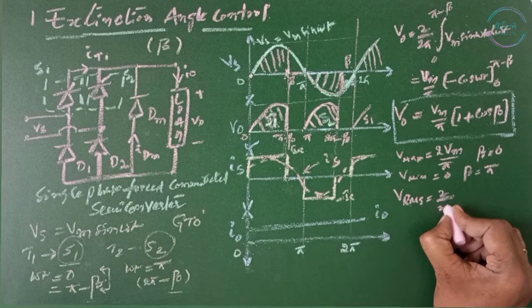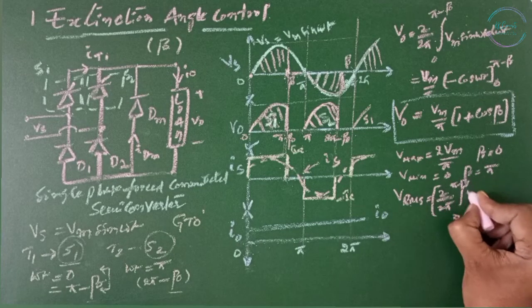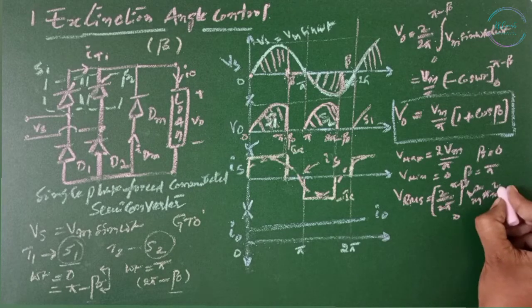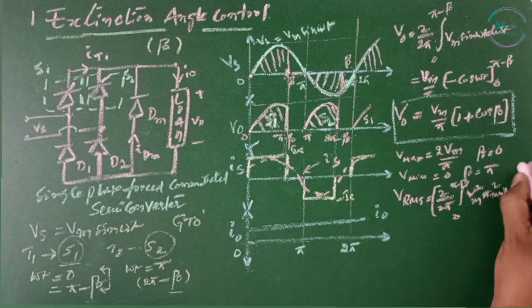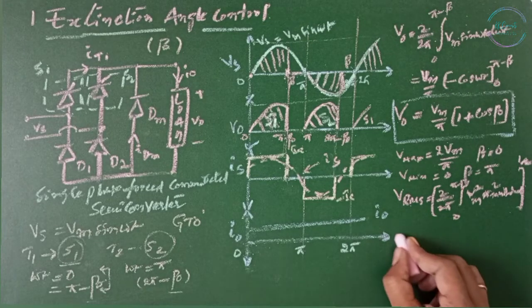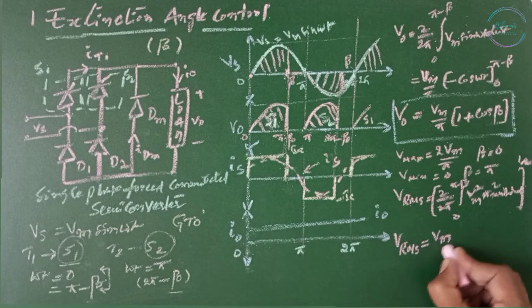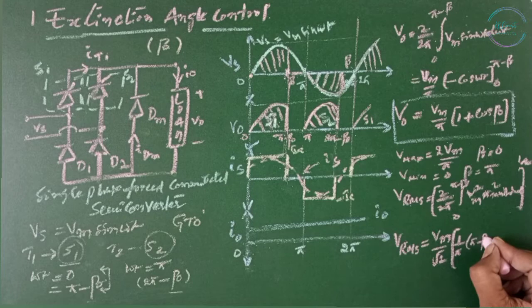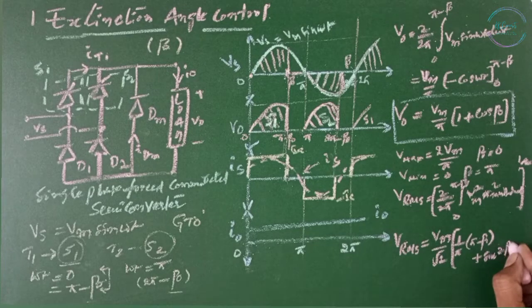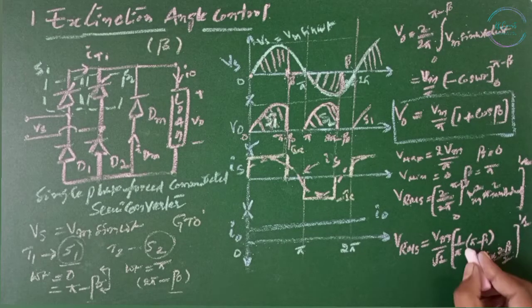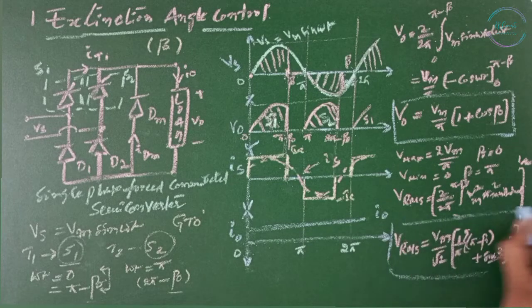Vrms equals 2 by 2 pi integral 0 to pi minus beta Vm square sin omega t d omega t, under the square root. If you solve this, Vrms equals Vm by root 2 times square root of (1 by pi times (pi minus beta plus sin 2 beta by 2)). This is our Vrms value.